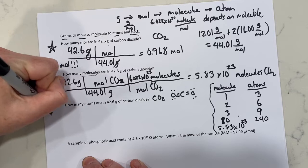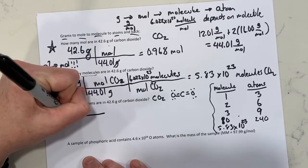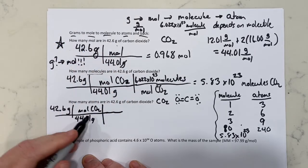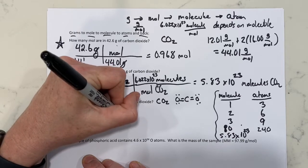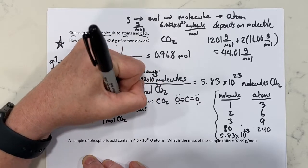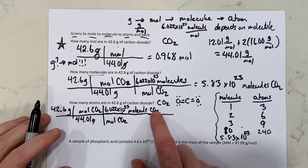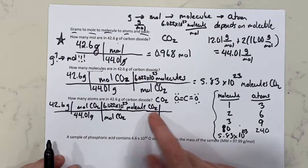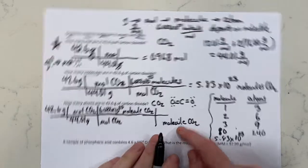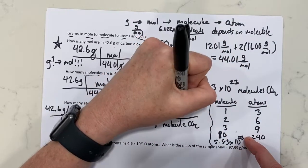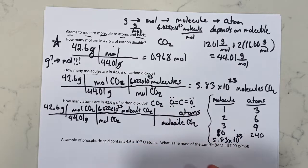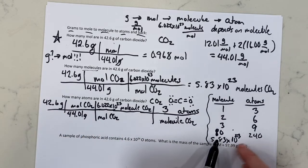Let's go back to our process: grams to moles to molecules to atoms. Starting with 42.6 grams, we divide by the molar mass of CO₂ to get moles of CO₂. Then multiply by 6.022 times 10 to the 23rd molecules per mole of CO₂. Now this is molecule of CO₂, and we're turning it into atoms — in one molecule of CO₂ there are three atoms.